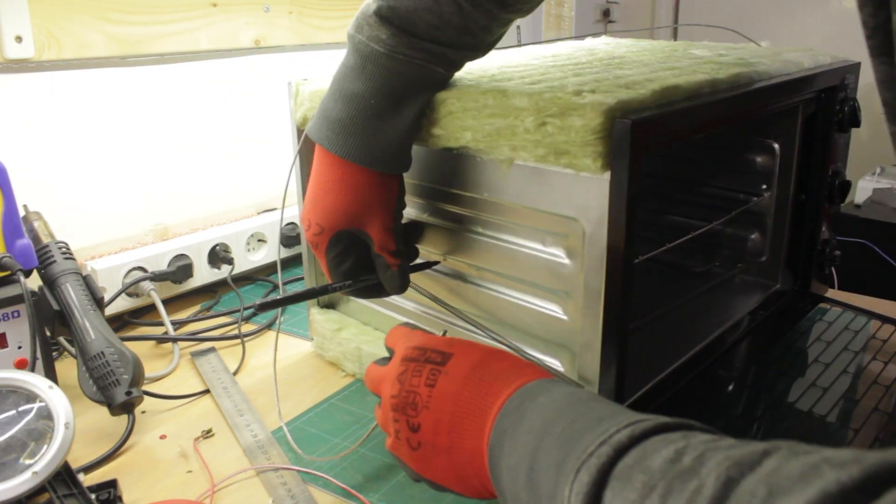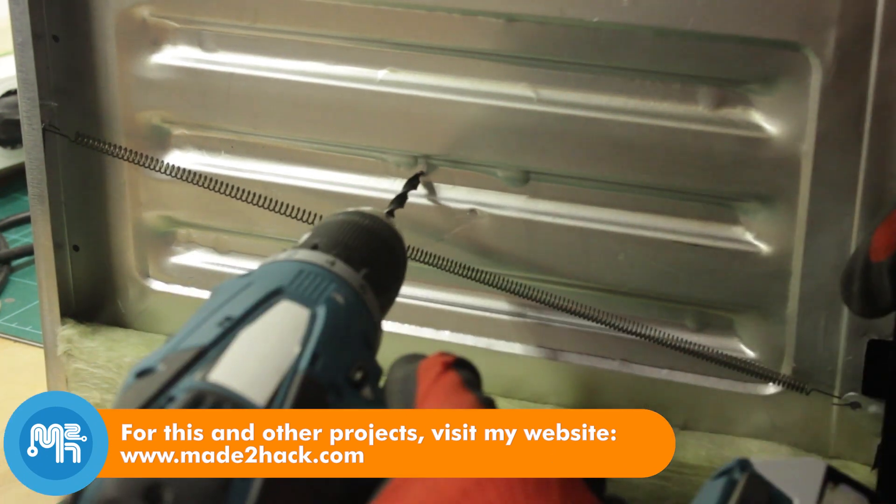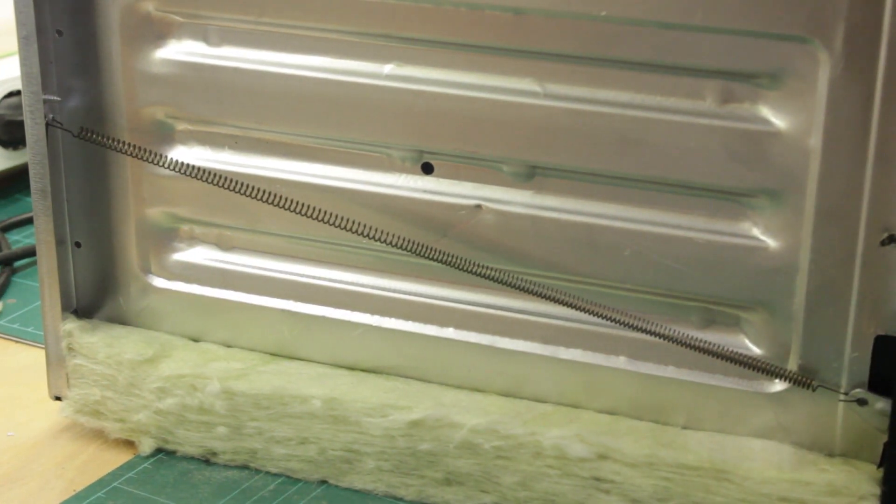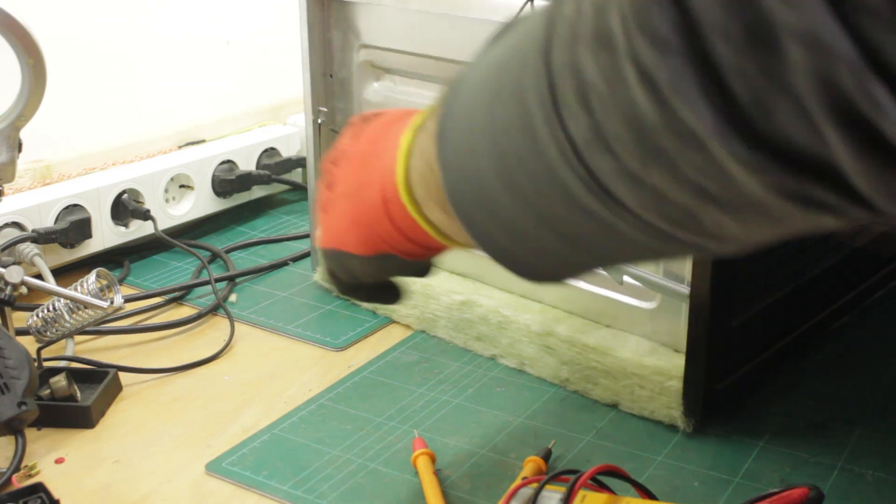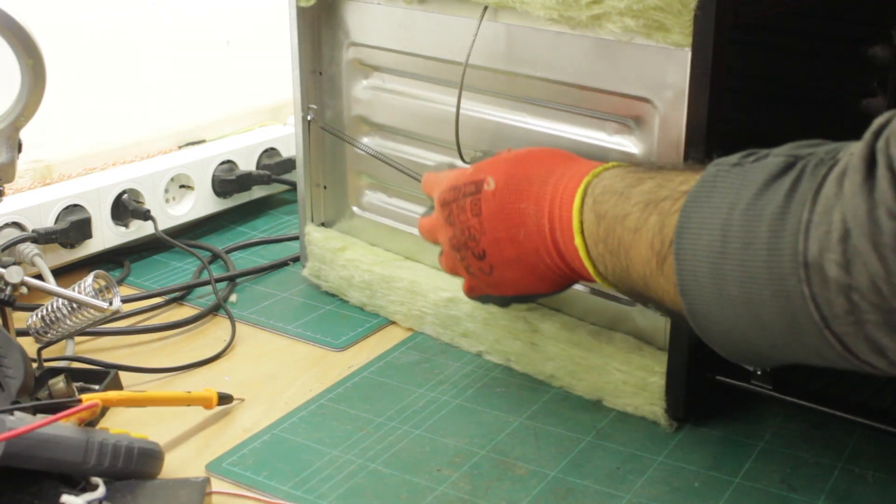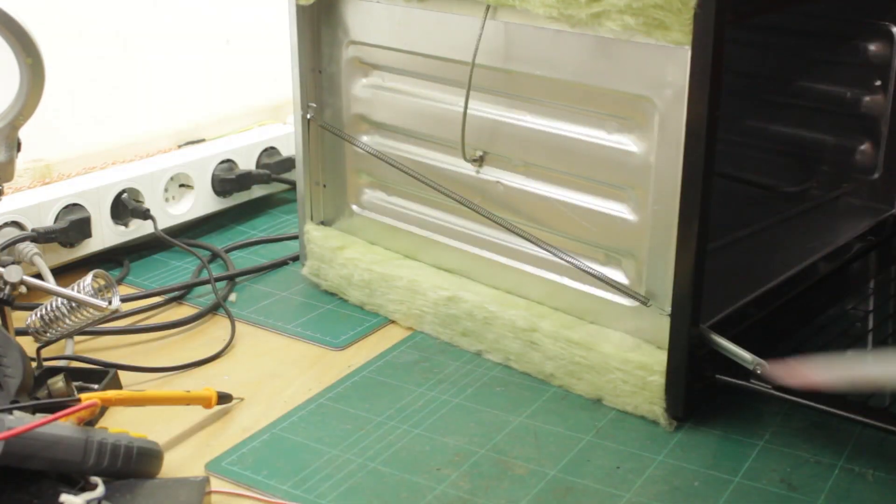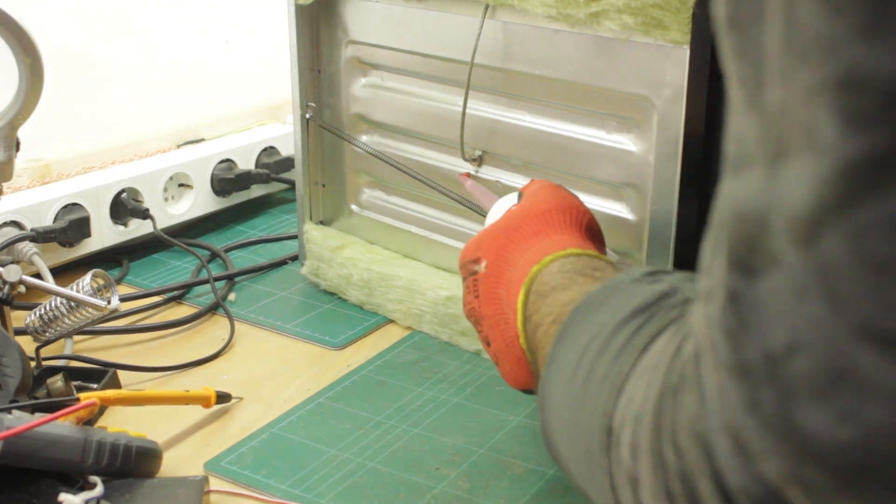I then decided where to insert the thermocouple. I drilled a hole on the side of the oven, inserted the thermocouple and screwed it in place. I'm using high temperature silicone to seal the hole and insulate around the area.